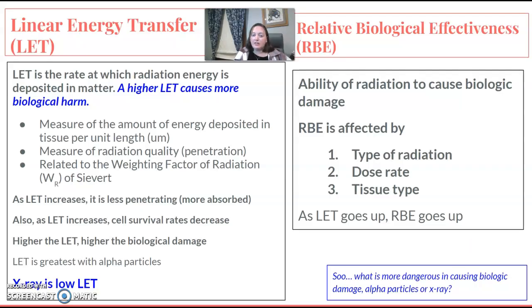LET is a measurement of the radiation quality, which is our penetrability or penetrating power of our x-ray. It's also related to the radiation weighting factor — if the weighting factor goes up, it's more damaging also. So as LET increases, it's less penetrating and more absorbed. As LET increases, the cell survival rate decreases. Higher the LET, higher the biological damage. LET is greatest with alpha particles, because the alpha weighting factor is much higher than x-ray. Diagnostic x-ray is going to be a low LET.